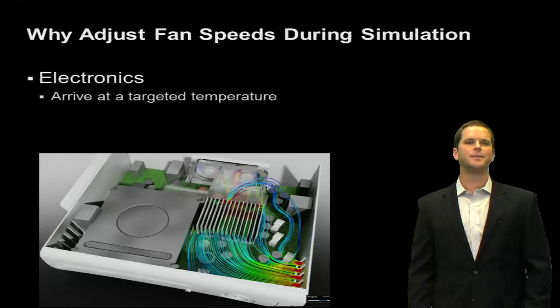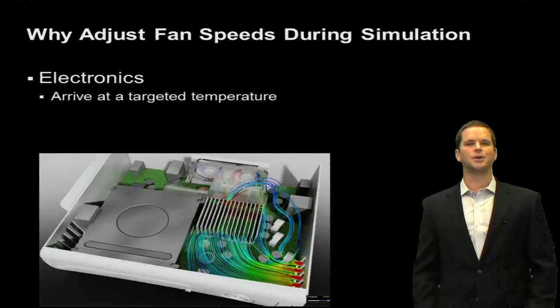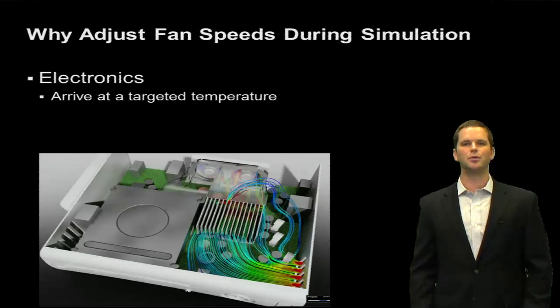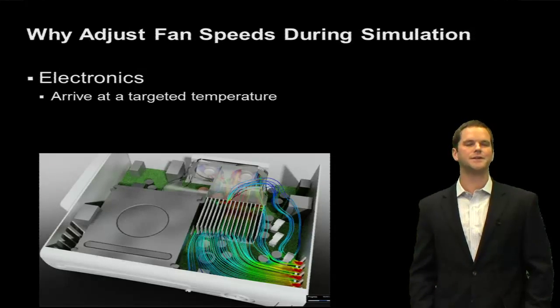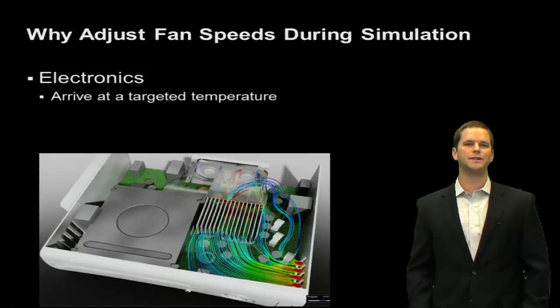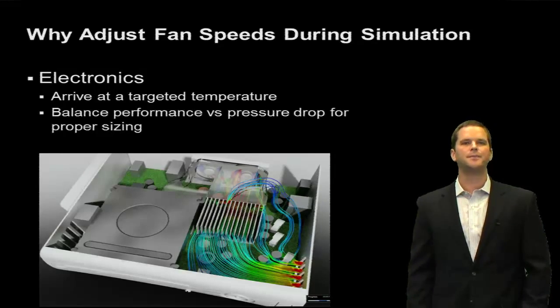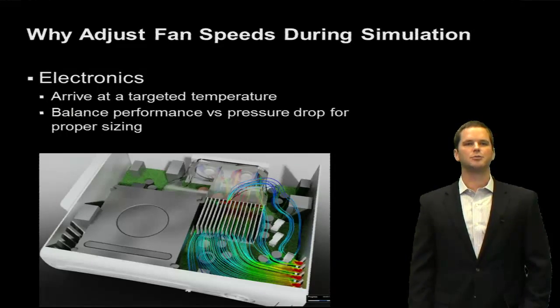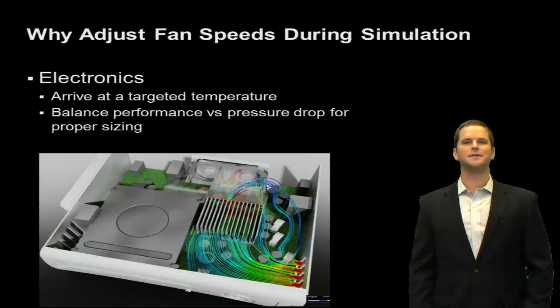But why would we want to adjust that? We want to arrive at a targeted temperature for our chips, components, LEDs, and circuit boards. We have data sheets that tell us exactly what their maximum temperatures are. So we want to apply a safety factor and come in below those, but not over-size the fan as well. We want to balance performance versus pressure drop so that we can properly size the fan.